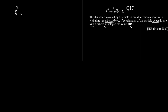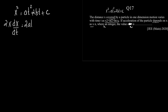So we have x² = at² + 2bt + c. Differentiating this equation, we get 2x · (dx/dt) = 2at + 2b. We can write this as x · v = at + b, since dx/dt is v. This is equation number one.